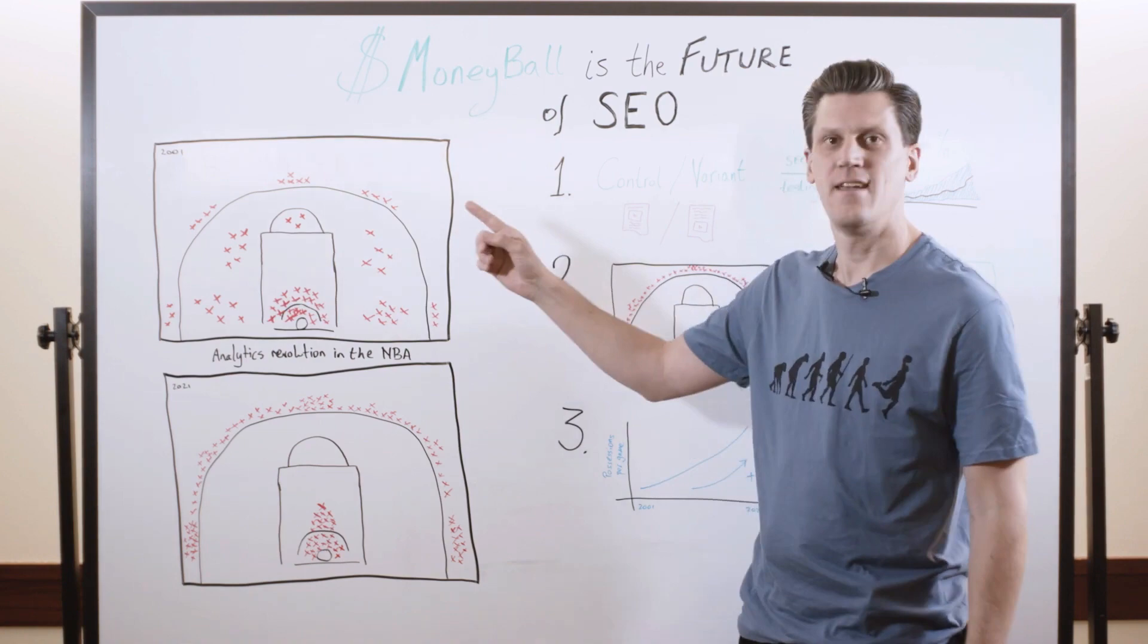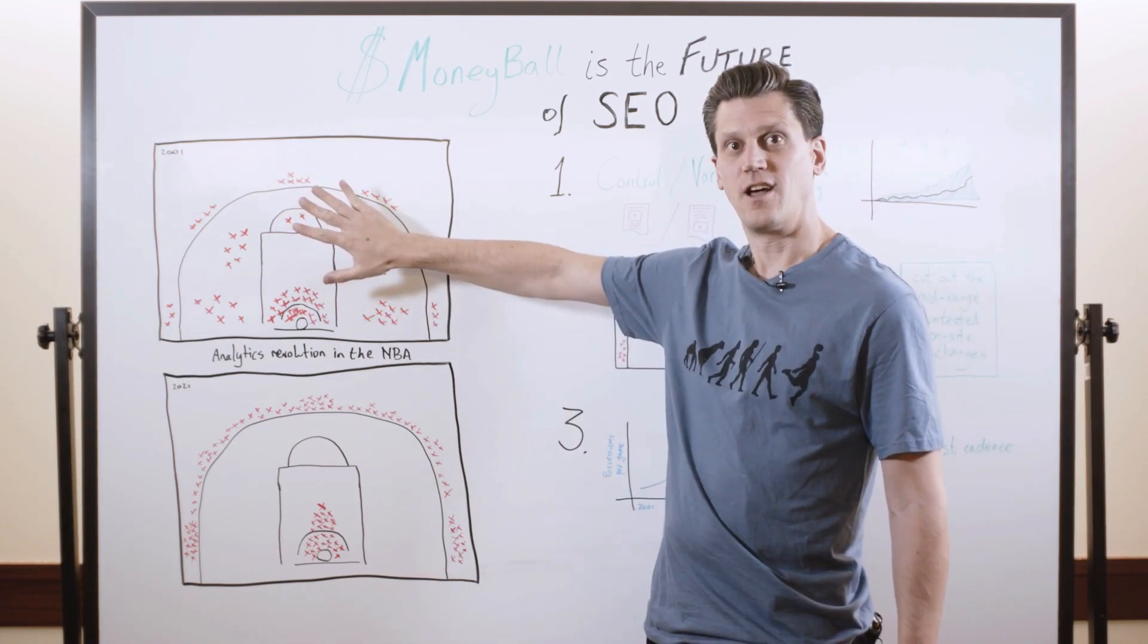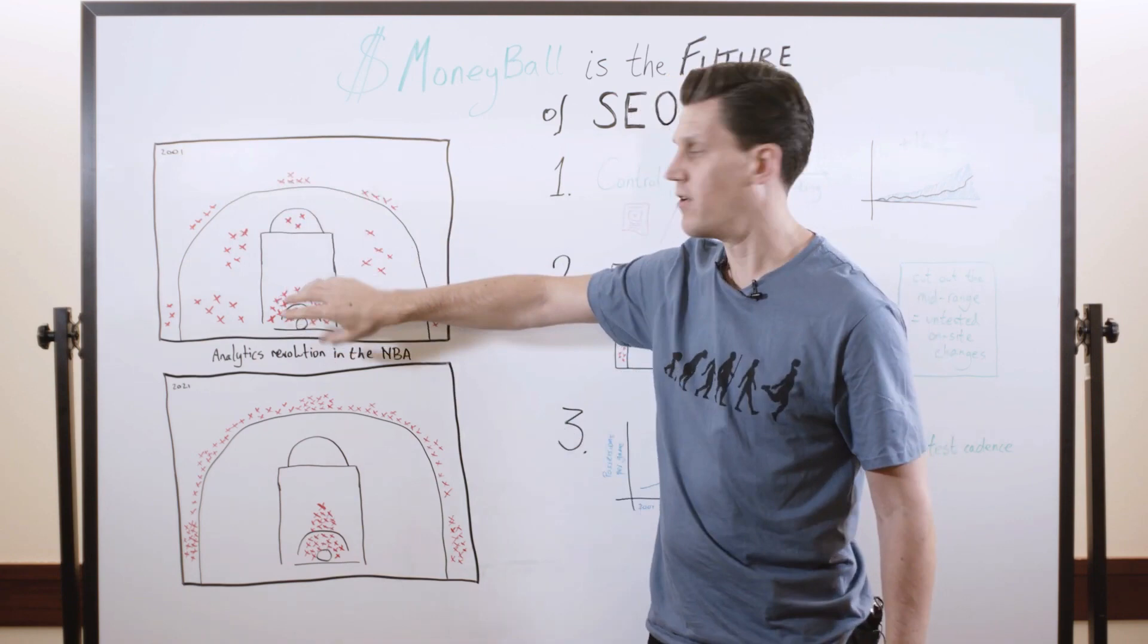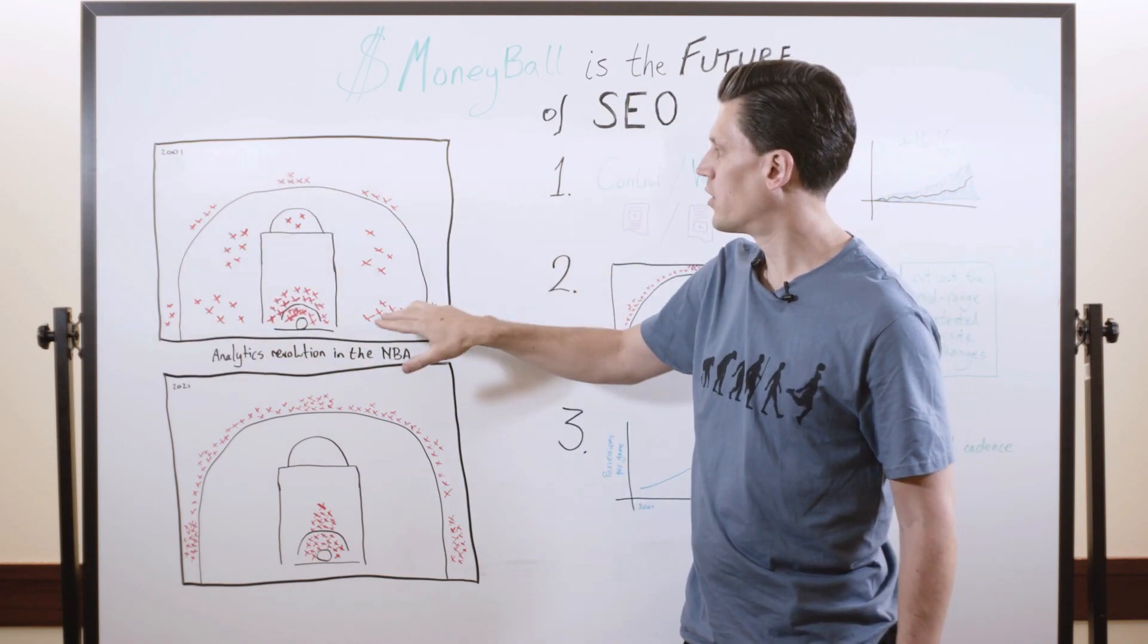I want to start today by talking about the NBA in 2001. This is what the shot chart looked like. These are the 200 most commonly shot from locations in the NBA in 2001. In professional basketball, you can see that they took a load of shots around the rim, right? These are the dunks and layups. They took a load of shots from outside the three-point line, and they took a lot of these mid-range shots, which are all the jump shots in between.